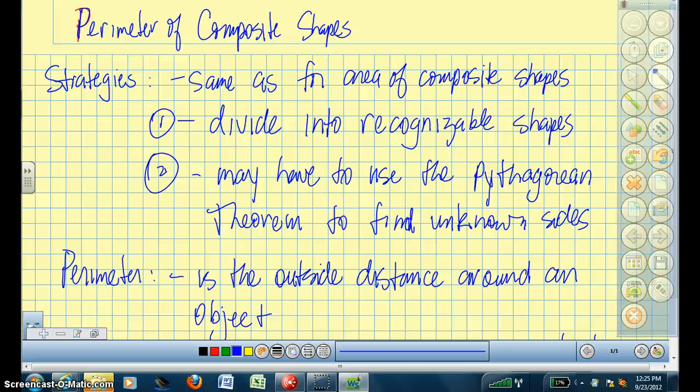The strategies are very similar to what we used last day. You want to divide the shape into recognizable shapes. And here's one catch: you may have to use the Pythagorean theorem that we learned about a few days ago in order to find some of the unknown sides.